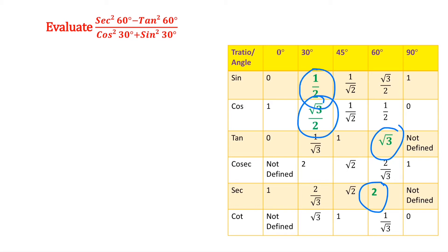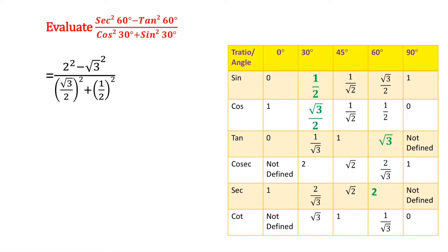Substituting all the values: secant squared 60 degrees is 2 squared, minus tan squared 60 degrees which is root 3 whole square, divided by cos squared 30 degrees which is root 3 by 2 whole square, plus sin squared 30 degrees which is 1 by 2 whole square.